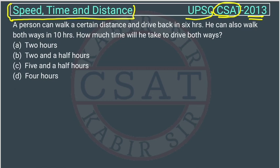A person can walk a certain distance and drive back in 6 hours. He can also walk both ways in 10 hours. How much time will he take to drive both ways?